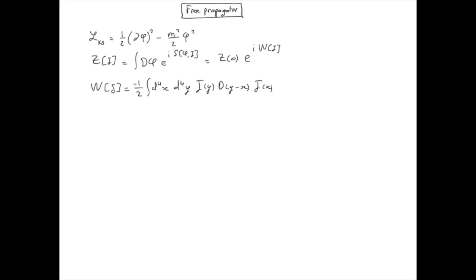Here d is a propagator as it propagates a disturbance of the field from the space-time position x to y. This is therefore a very important object in quantum field theory. This is a free propagator because we started with a Lagrangian which has no interaction, so that's a free Lagrangian, the Klein-Gordon Lagrangian for real scalar fields.